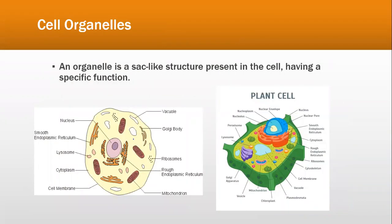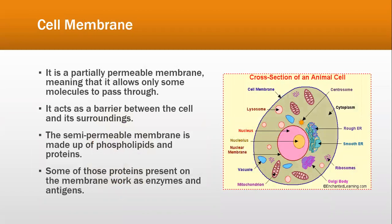Cell organelles are all sac-like structures present in the cell, having specific functions. In both plant and animal cells we have organelles such as the nucleus, cell membrane, mitochondria, and chloroplasts. The cell membrane is also called a partially permeable membrane, a selectively permeable membrane, or a semi-permeable membrane — all three names refer to the cell membrane. It allows only some molecules to pass through and also acts as a barrier between the cell and its surroundings.